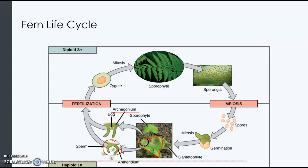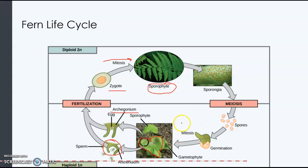The sperm still swims to the egg and fertilization occurs, and then you have a diploid zygote. The zygote divides by mitosis and forms the sporophyte, which is what you recognize as the fern plant. So the dominant generation for the fern is the sporophyte.